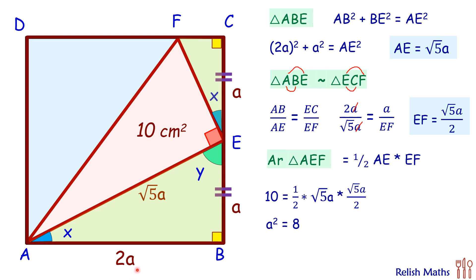Now area of square is (2A)². So we'll multiply both sides with 4. We'll get (2A)² equals 32. And thus the area of square is 32 centimeter square. And that's our answer.